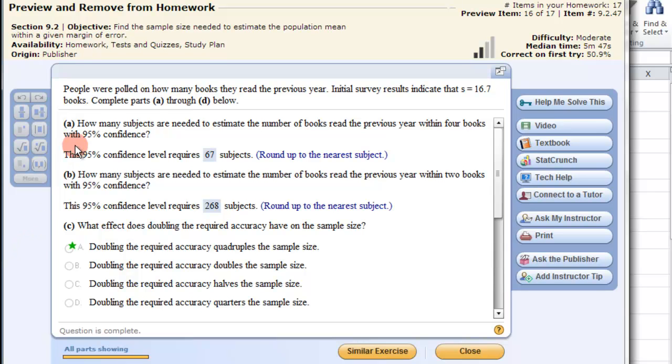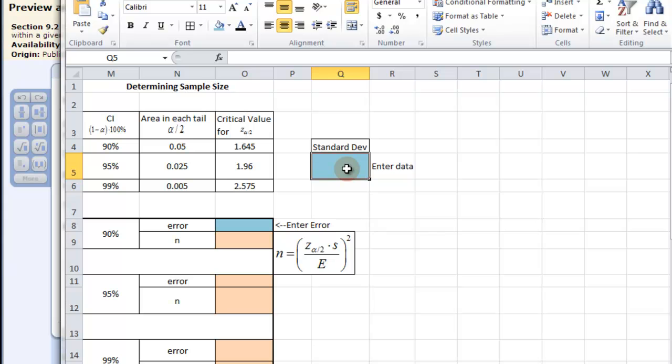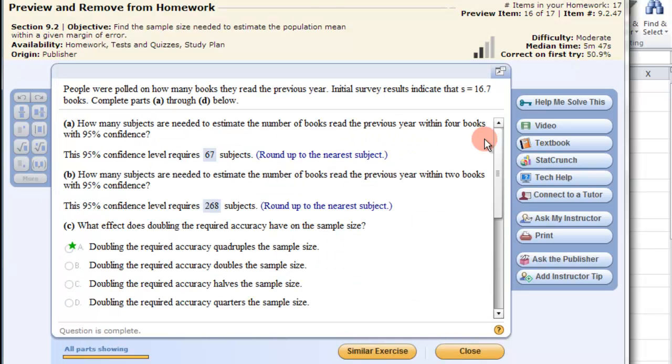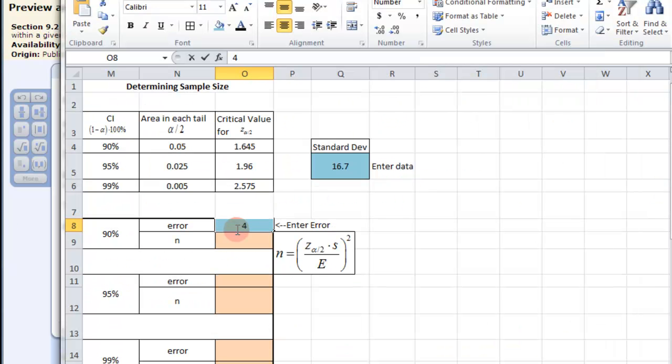People were polled. Initial surveys results that the sample standard deviation was 16.7 books. Complete parts A through D. How many subjects are needed to estimate the number of books read the previous year within four books of the 95% confidence. So within four books is our error, and that's our standard deviation. So I can plug that in. Again the blue box I insert data and the red boxes I won't insert. The error, number of books, it was four books. Insert data.